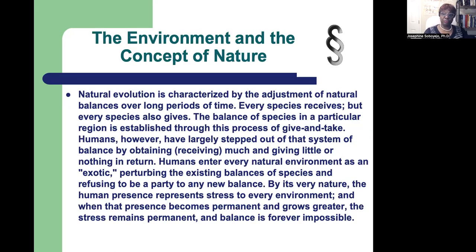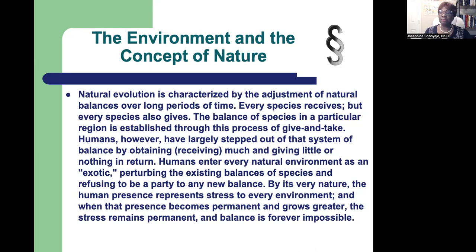Natural evolution is characterized by the adjustment of natural balances over long periods of time, and every species gives and receives — it's give and take. A very good practical example: do you know why it is so wonderful and beautiful to have trees, green plants, and flowers around wherever you live? Because the oxygen those trees give out is what we need as humans to breathe, and what we breathe out — carbon dioxide — is what those green plants and trees need to survive. So every species gives and takes.